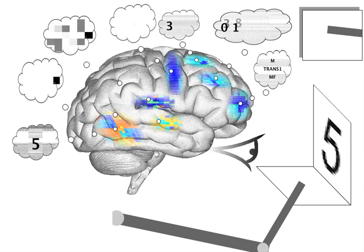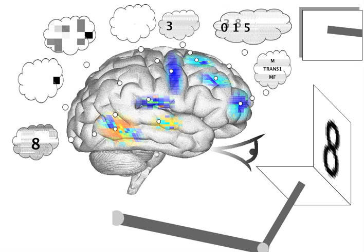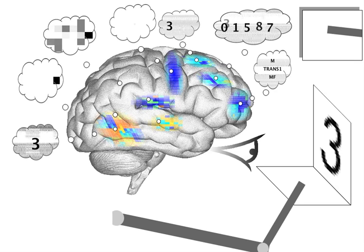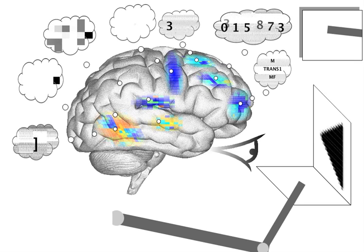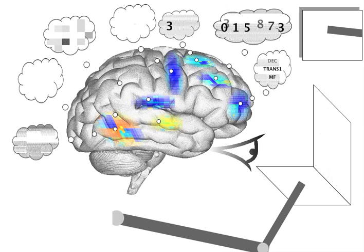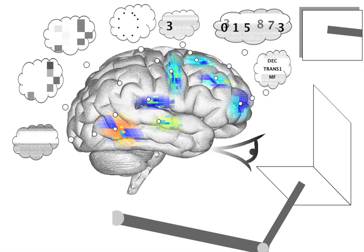We have seen several tasks that Spawn performs correctly, but the errors it makes are equally important to determining if it is a good model of human cognition. Note that the darkness of the letter in the thought bubble indicates how well that item can be decoded from the current representation.